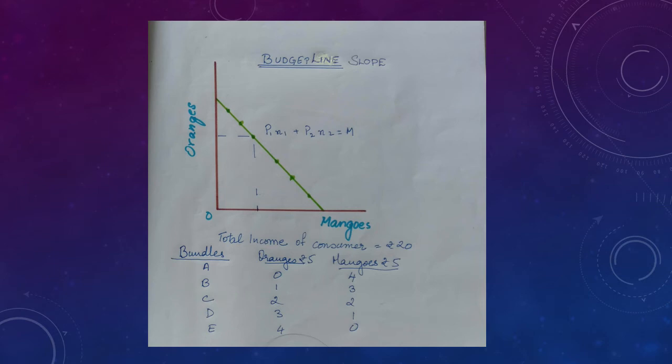This is the continuation of the diagram for the slope of the budget line — kindly make a note. According to the example of the income limitation of Rs. 20, the different combinations available to the consumer may be the different bundles A, B, C, D, and E. The two commodities that he can buy are either mangoes or oranges in different combinations. Kindly note down the diagram.